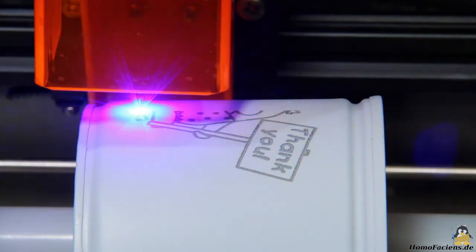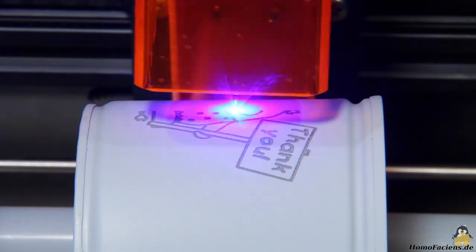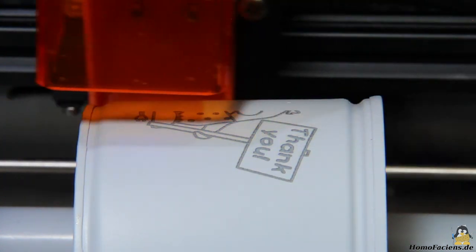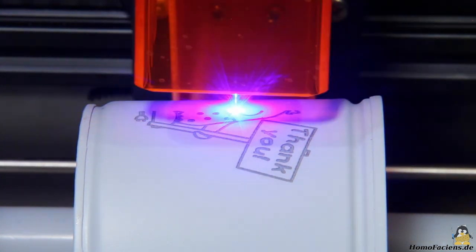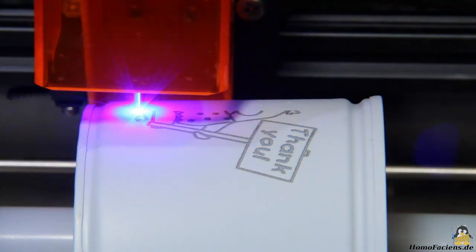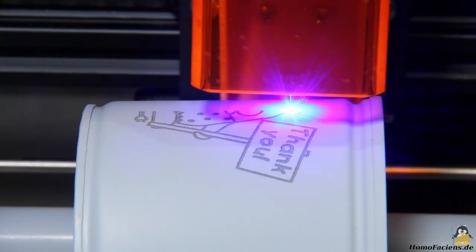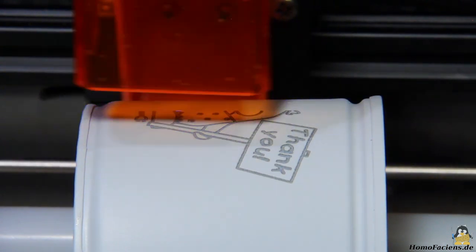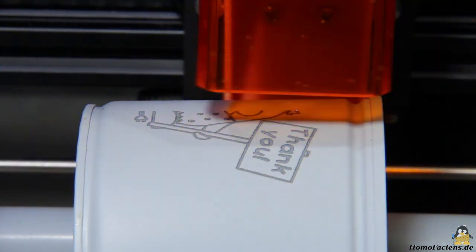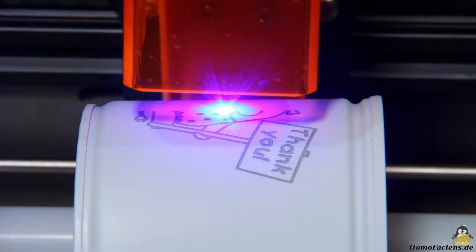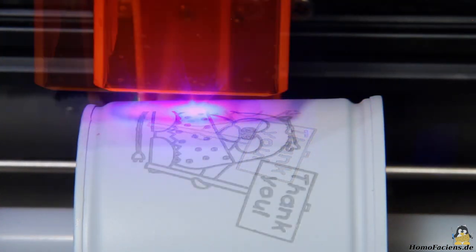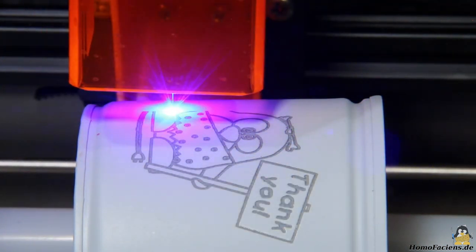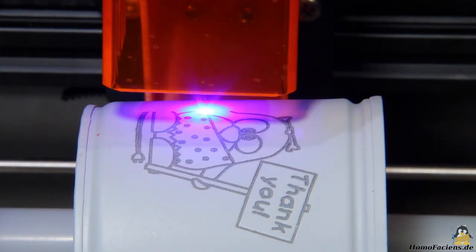What else can be done with the Ortur Laser Master 2 Pro is shown on my website. There you will also find high resolution photos of the examples made in this video as well as further information about the engraver. The scripts I have written can also be downloaded from my website and many chapters on physical computing explain in detail how motors and so machines can be controlled by software.